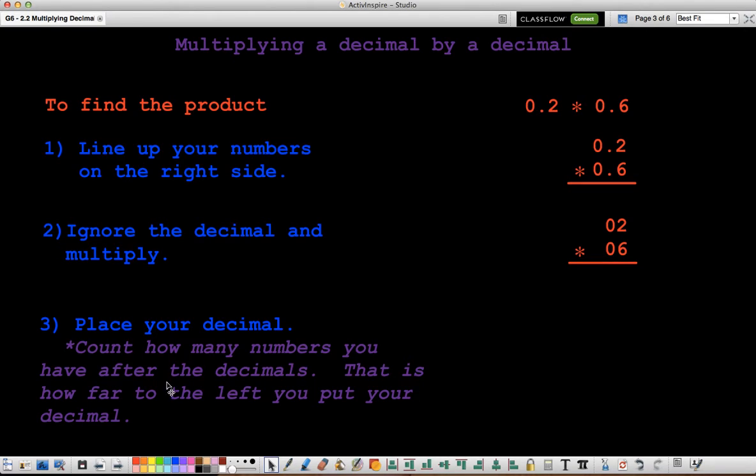So after we do that is when we place our decimal. So here, we're going to get 2 times 6 is 12. I should write in not black so you can see it. So we have 12. Carry the 1. 0 times 6 is 0. Plus 1 is 1.